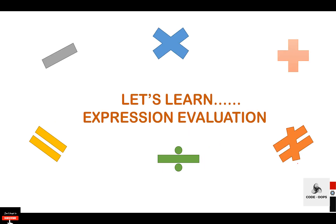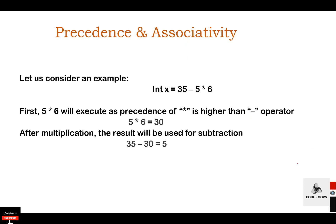Let's learn expression evaluation. We can evaluate an expression based on precedence and associativity. The concept of operator precedence and associativity in C helps determine which operator will be given priority when there are multiple operators in an expression. The compiler first evaluates the operator with higher precedence, which helps maintain unambiguous expressions and avoids unnecessary use of parentheses.